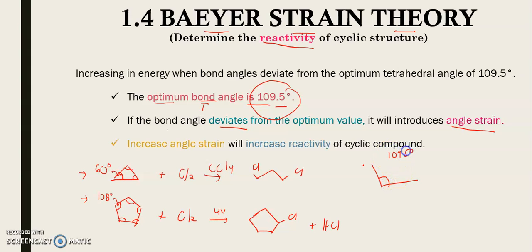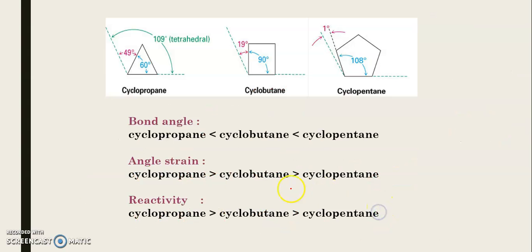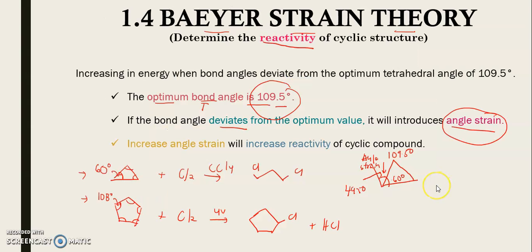When the bond angle is not equal to 109.5, it will produce angle strain. For example, this is 109.5 degrees optimum, but your structure only has 60 degrees. So there are deviations of 49.5 degrees. This is what we call angle strain. What is the relationship between angle strain and reactivity? Increased angle strain will increase the reactivity.